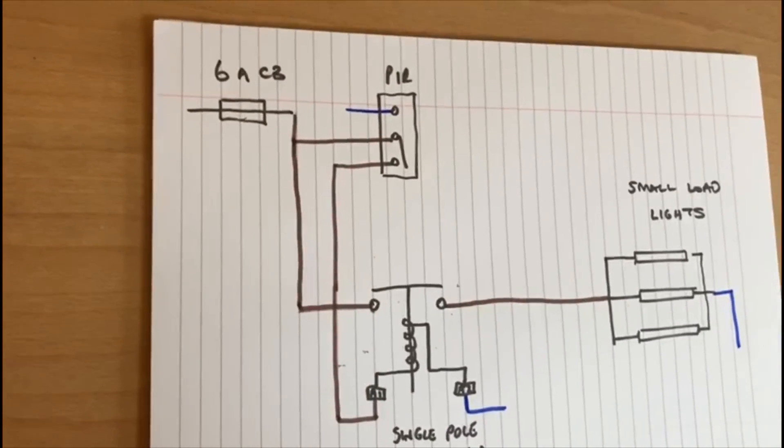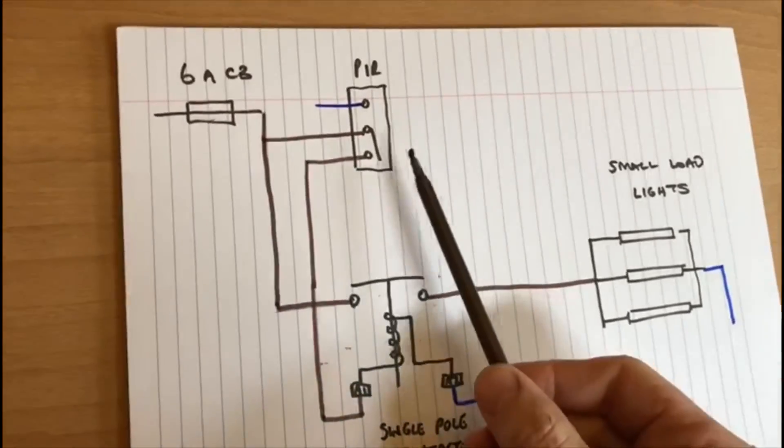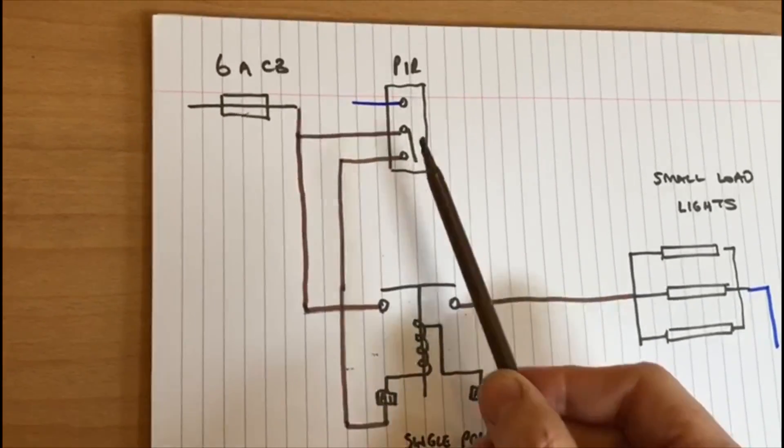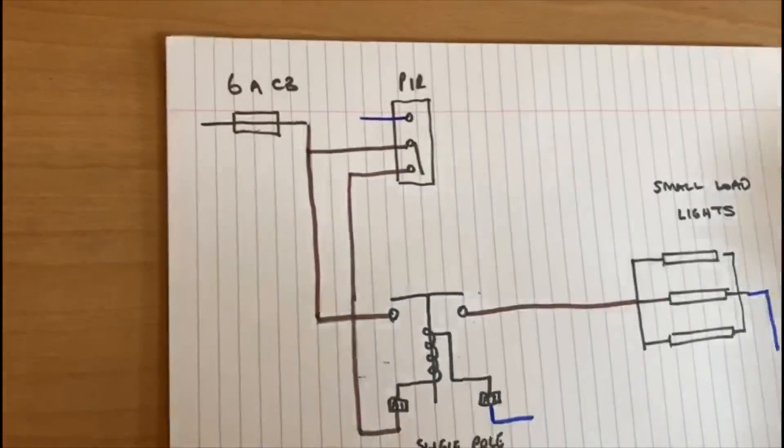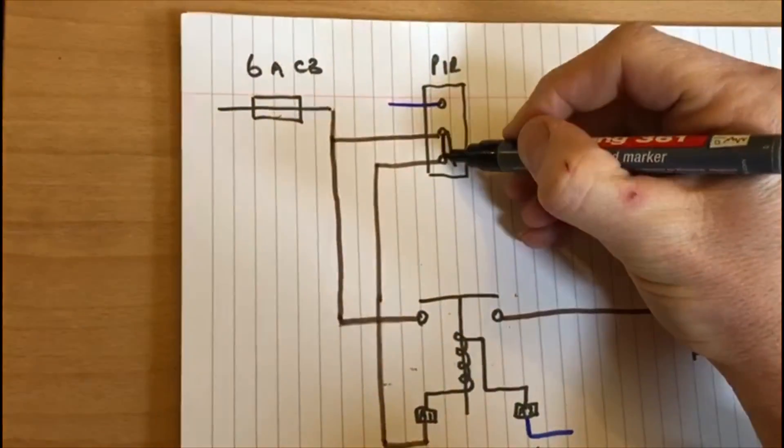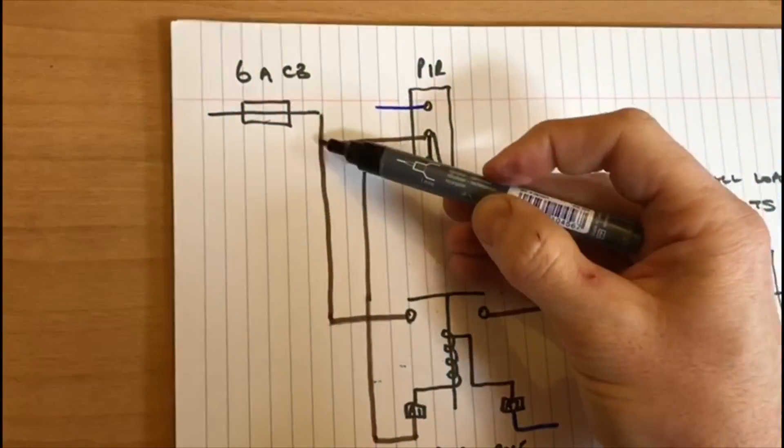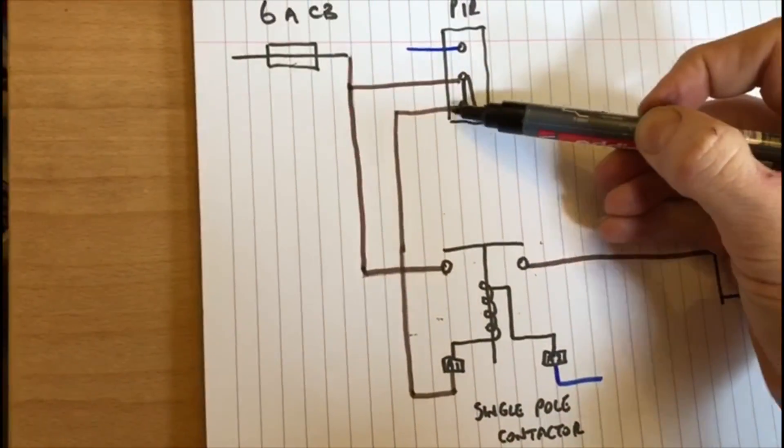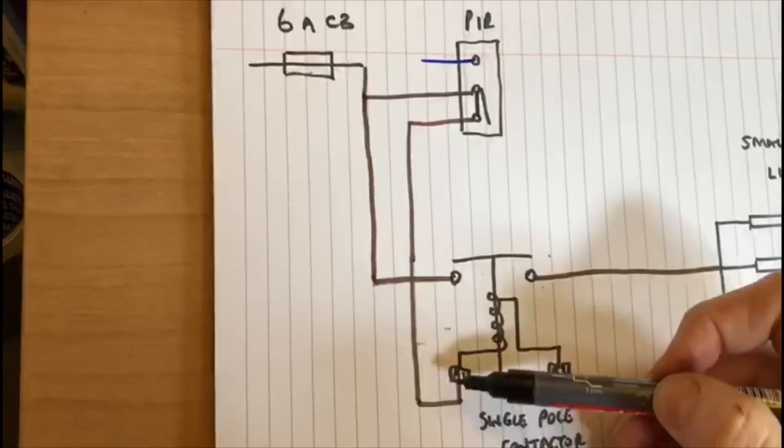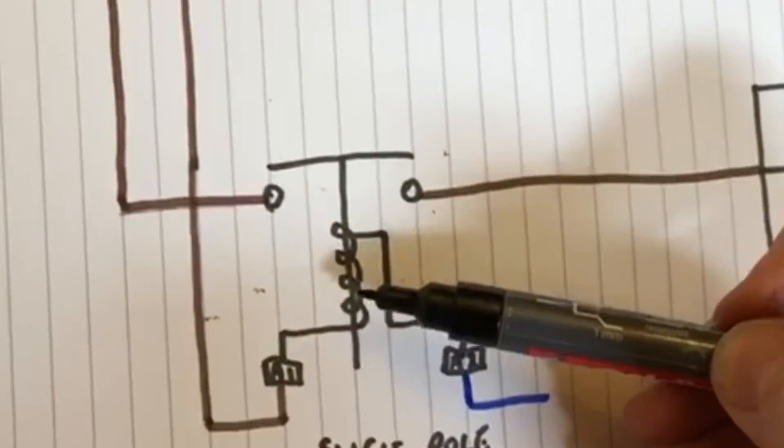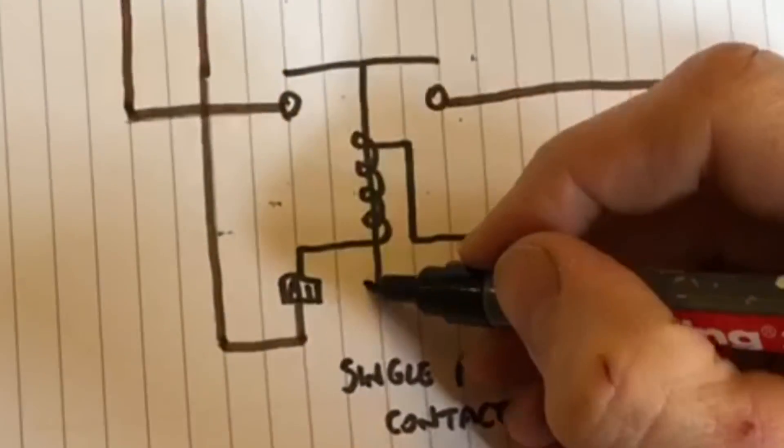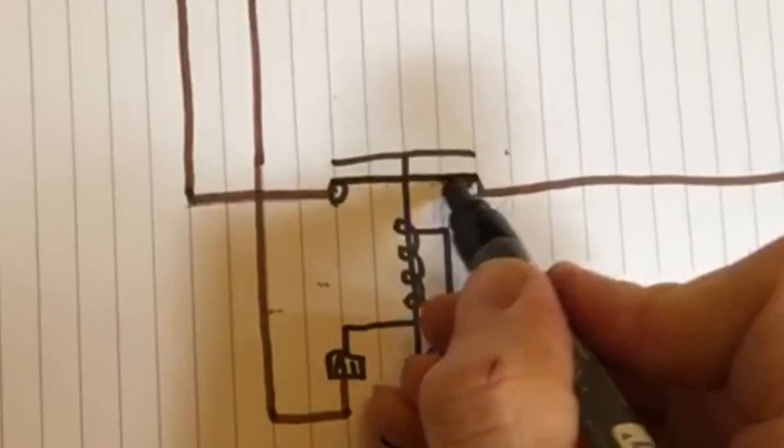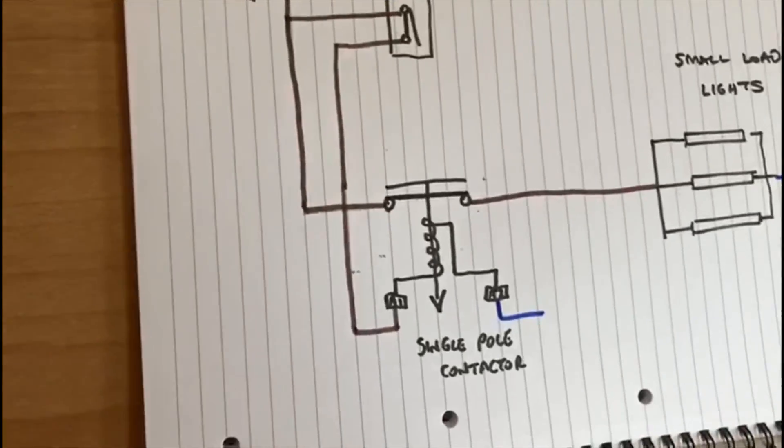So let's look at how it works. Somebody walks past the PIR and their body is detected. Now what happens is this switch will close. So now we have a circuit not only to here and to here, we now have a circuit going through to the coil. The coil becomes energized and pulls down in that direction, closing the contacts here, making a bridge across terminals one and two.